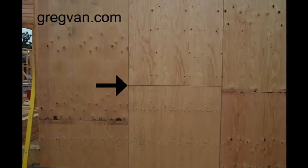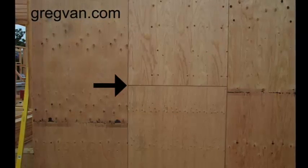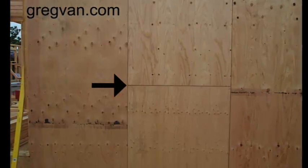The arrow here is pointing to a joint that is in between two pieces of plywood. Wherever you have two pieces of plywood meeting or butting up against each other, there's a good chance that you're going to need to leave a gap, a minimum of one-eighth of an inch.